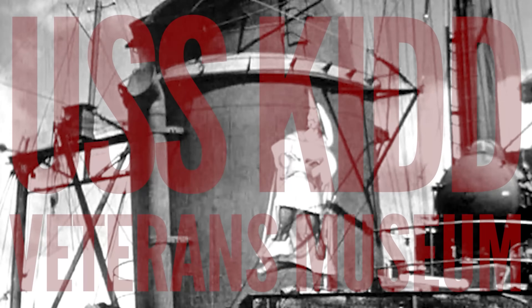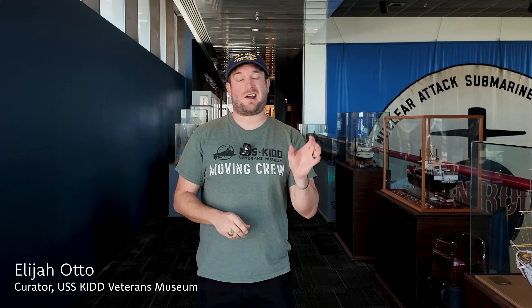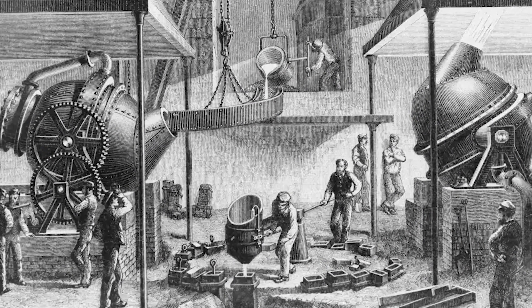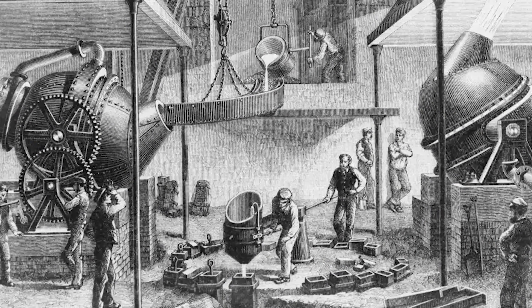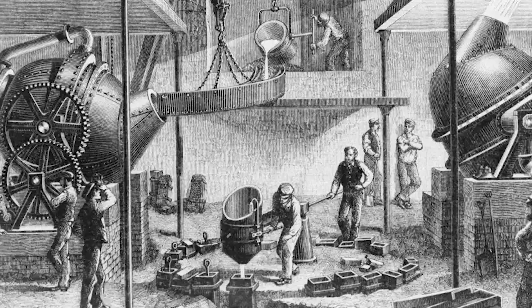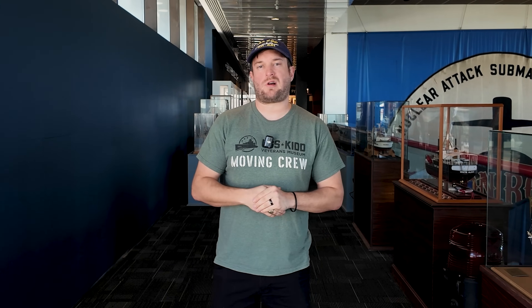Steel is a process which combines iron and carbon together, which when you combine two metals in chemistry, it's called an alloy. Steel production between the mid-1850s all the way through the mid-20th century is going to be done via what's called the Bessemer process. In really simplistic terms, the Bessemer process introduces air from the outside into the steel-making process.